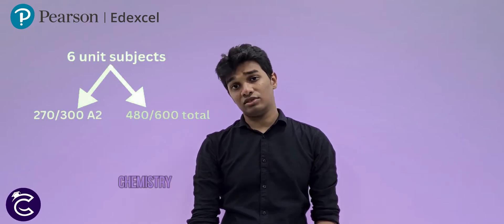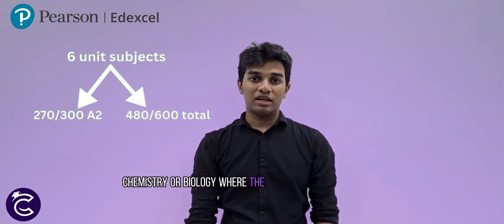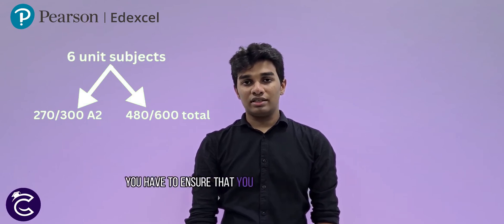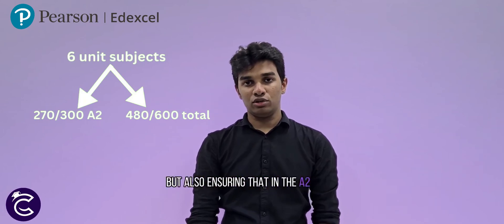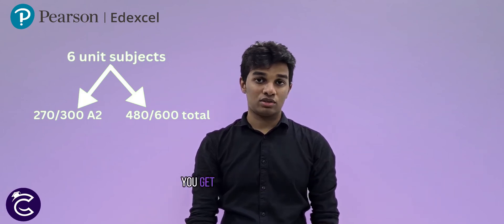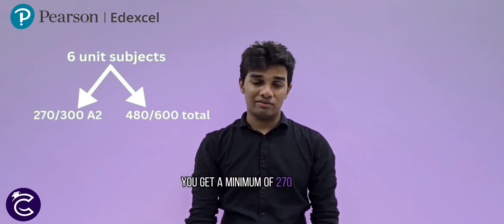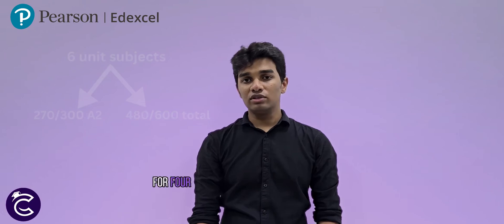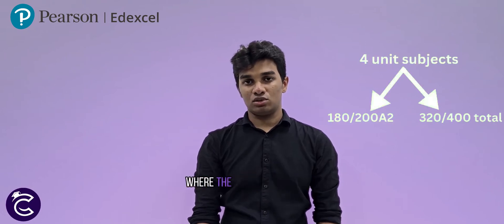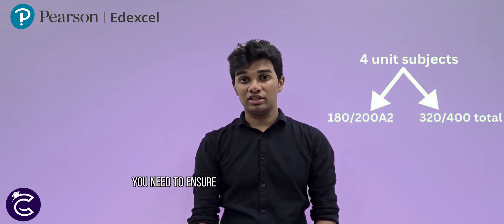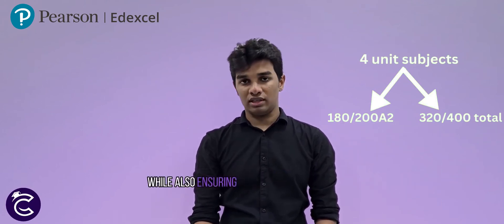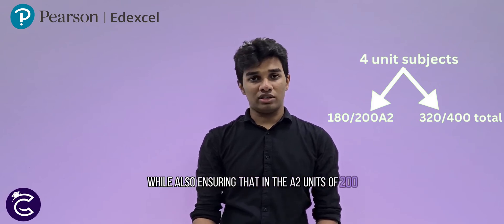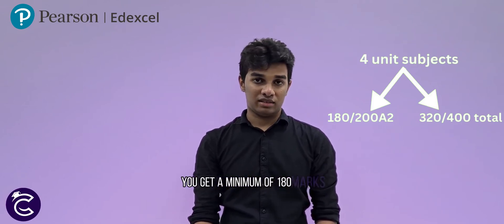For example, if you are sitting for a 6-unit subject like physics or biology where the total marks is out of 600, you need to ensure that you get a minimum of 480 marks, while also ensuring that in the A2 units where the total marks is 300, you get a minimum of 270 marks. For 4-unit subjects like business studies where the total marks is 400, you need to ensure a minimum of 320 marks, while also ensuring that in the A2 units out of 200, you get a minimum of 180 marks.